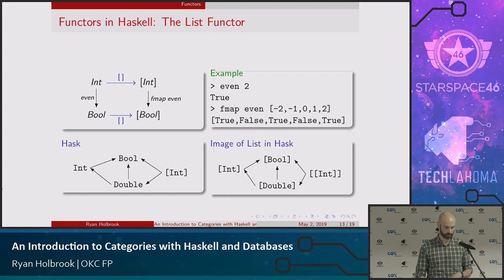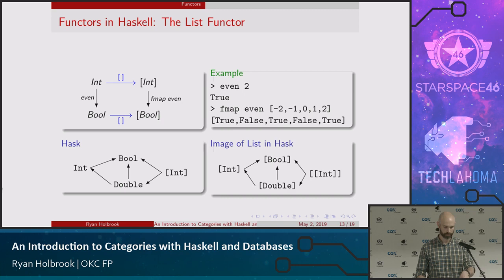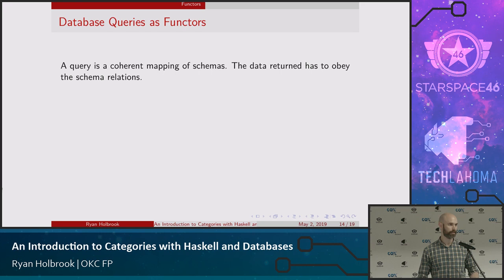A little example of functors in Haskell: you have a regular function, the list constructor maps integers to list of integers and booleans to list of booleans, and then fmap maps the actual function over — it maps the integers-to-booleans function to a list-of-integers-to-list-of-booleans function. Now, database queries as functors: it turns out you can think about querying a database as being a kind of functor, because you're setting up some new data structure that you're trying to match to the data structure you already have. It's a mapping of one system of relationships to another — and the data must be returned in a way that obeys the original schema relations.